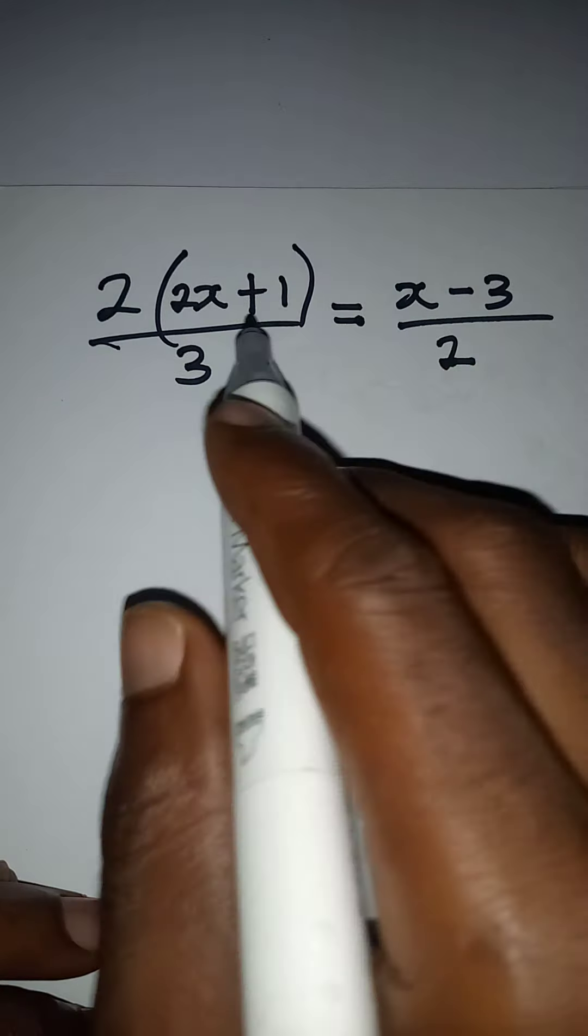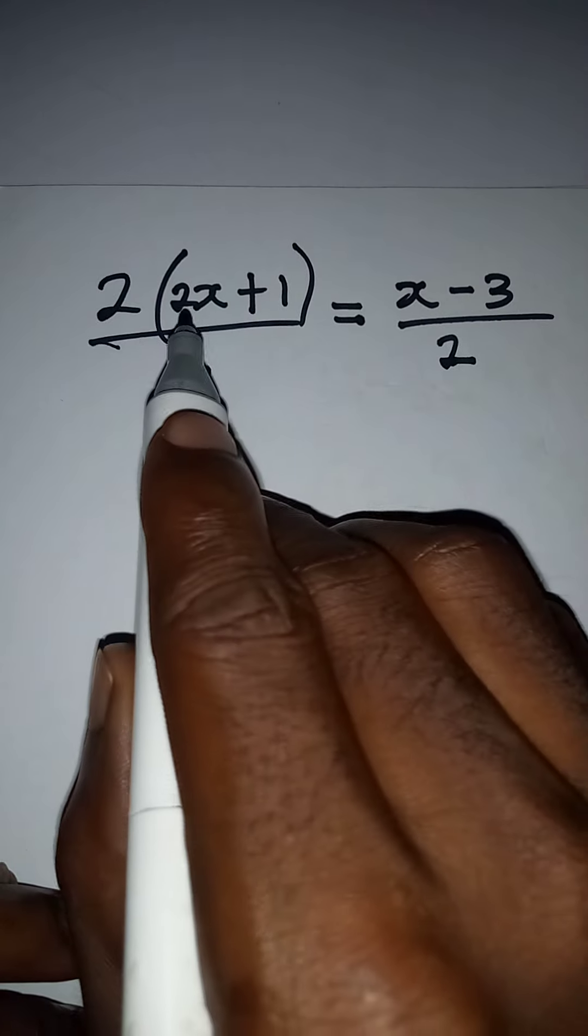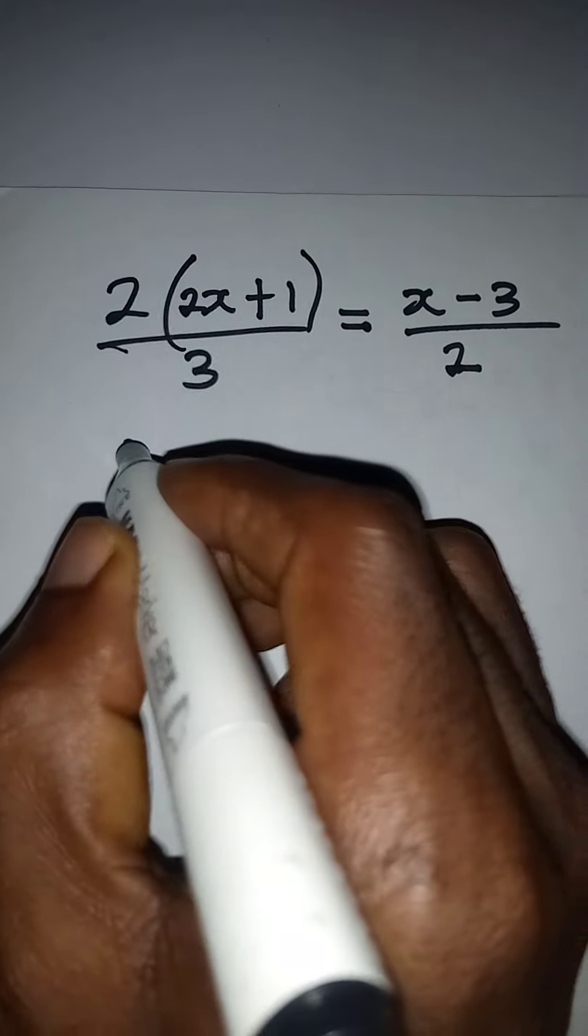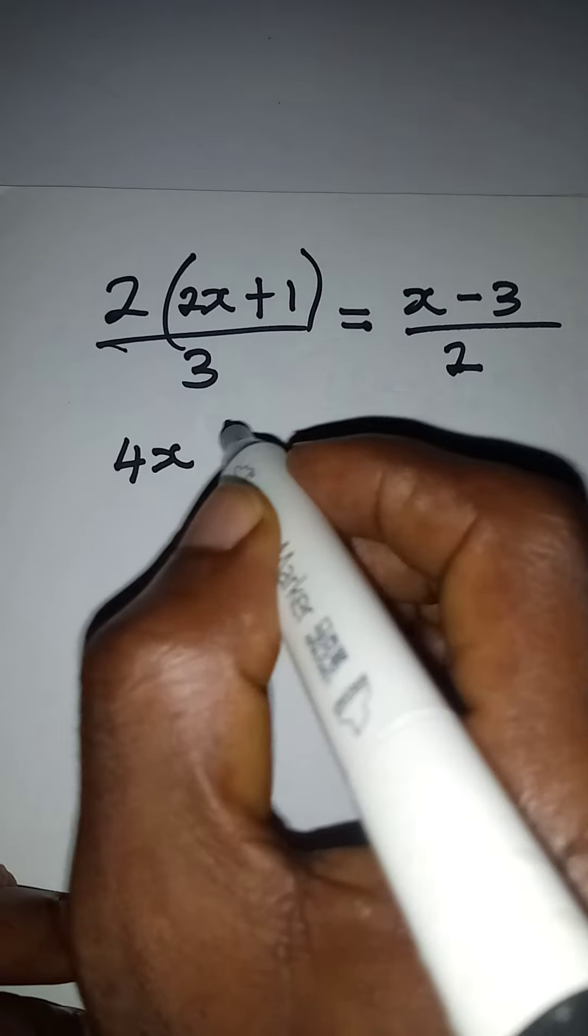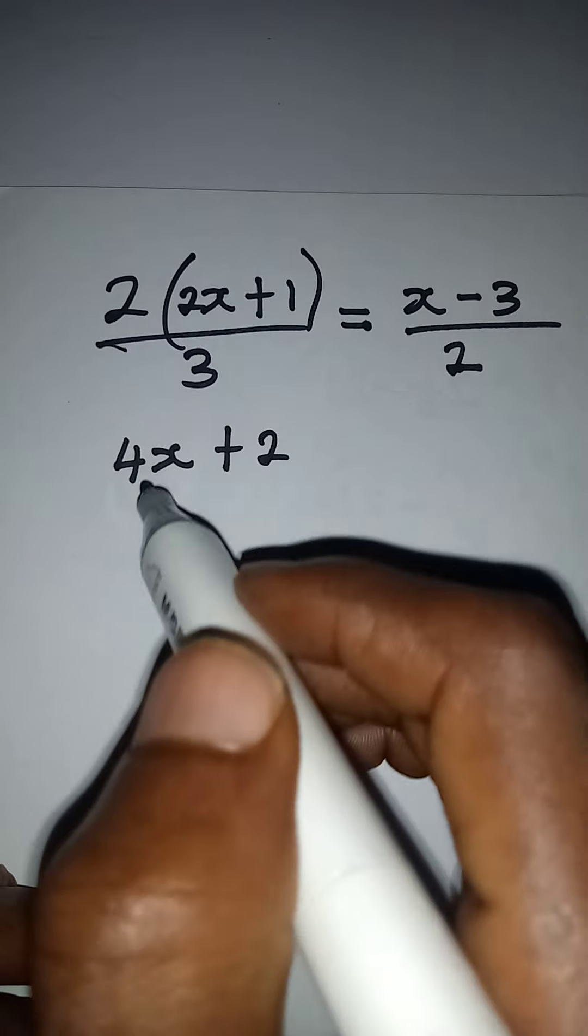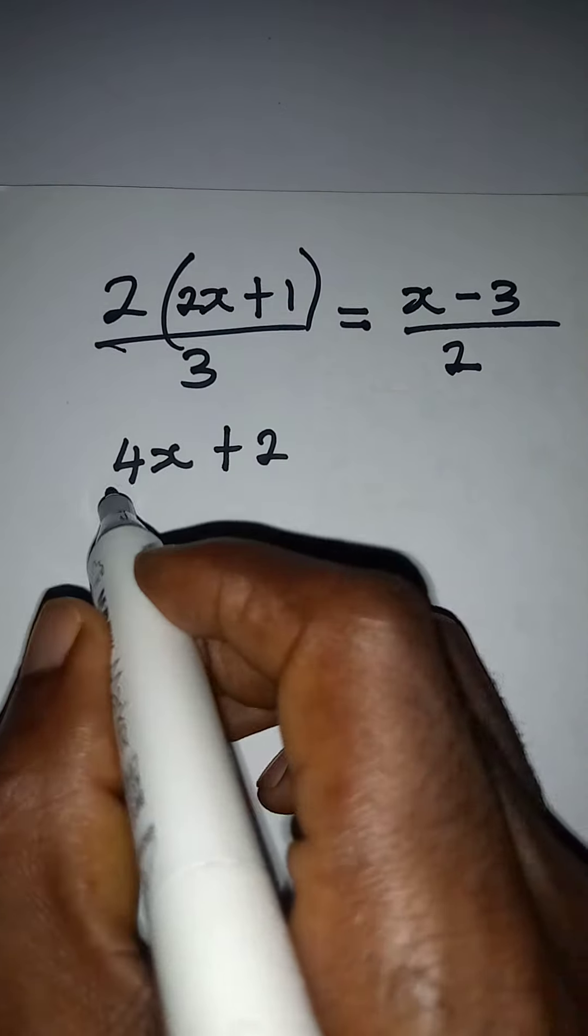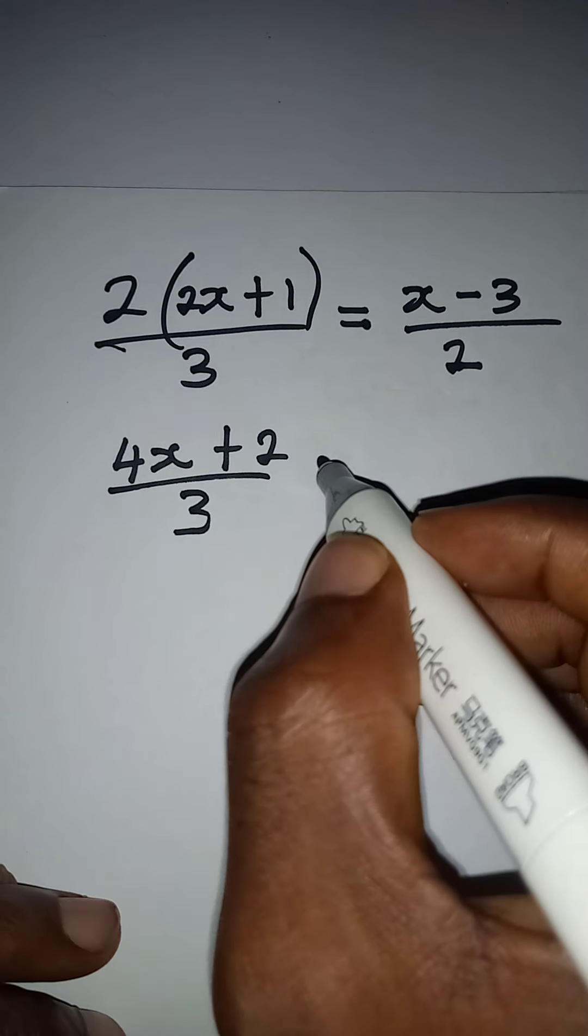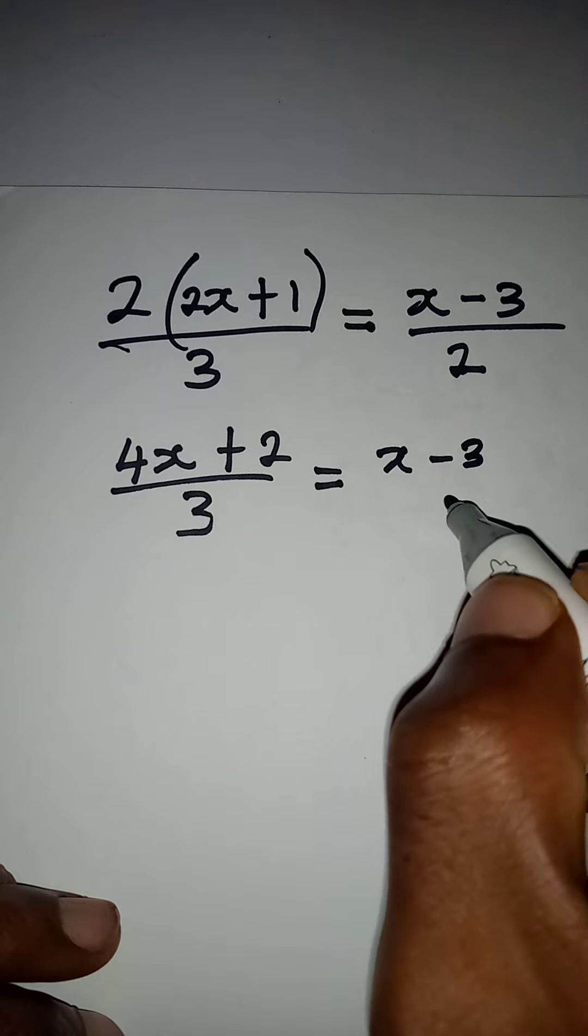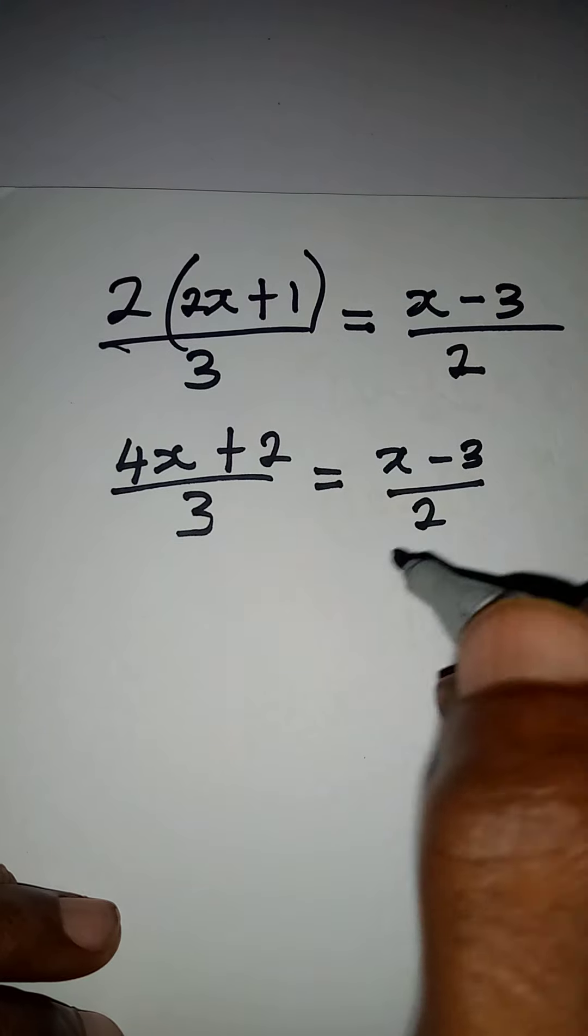Hello everyone, let's solve this problem very quickly. Now to begin with this, I'm going to open this bracket first. So I have 4x plus 2, that is 2 times 2x is 4x, then 2 times 1 is 2, divided by 3, and it's going to be equal to x minus 3 over 2.